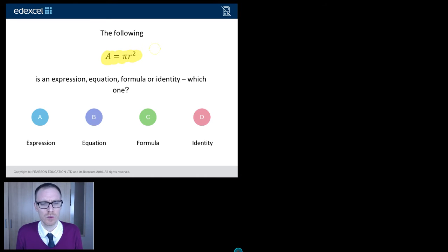The following, A equals pi R squared is, is it an expression, an equation, a formula or an identity? Which one is it? Well, we've got a one in four chance but we don't want to be guessing, do we? We want to know.